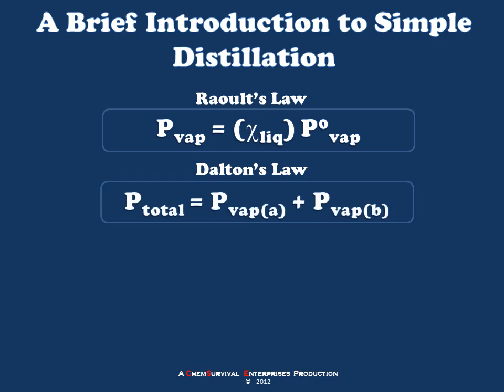The second is Dalton's Law, which predicts that the total pressure in any system is equal to the sum of the vapor pressures of each component, regardless of the identity of that component.